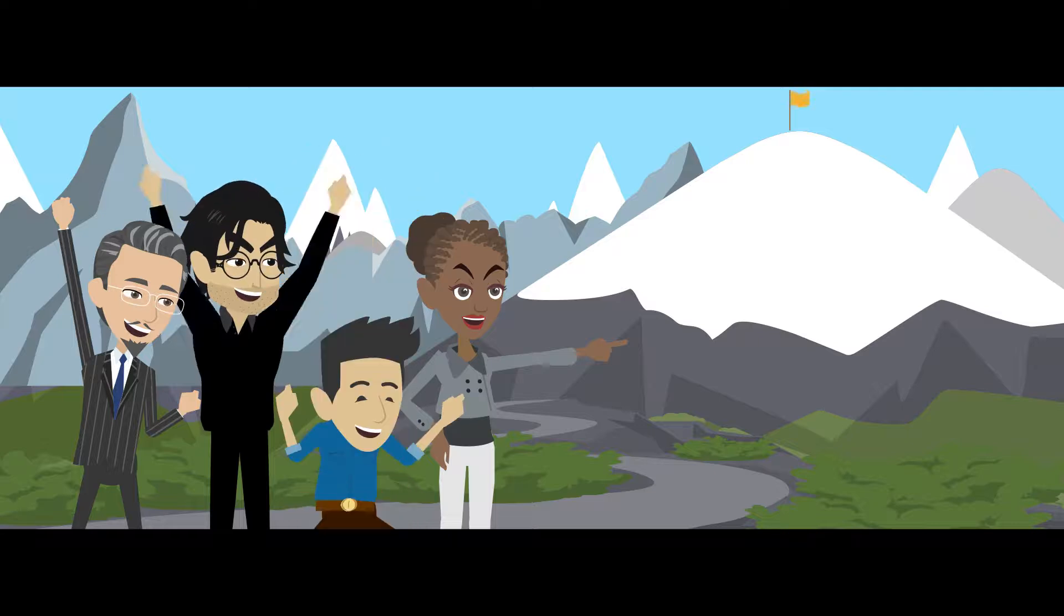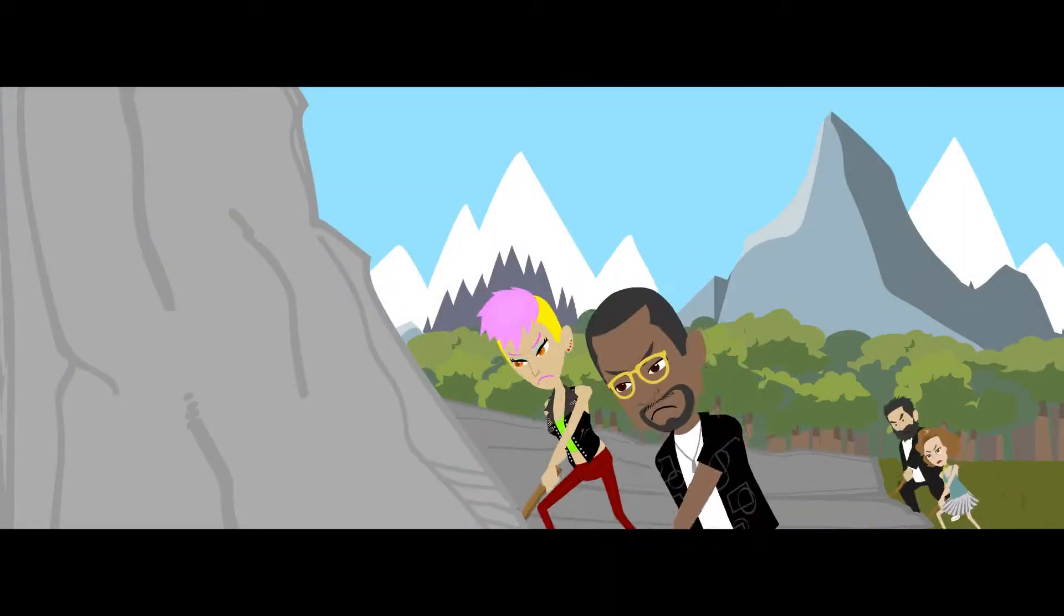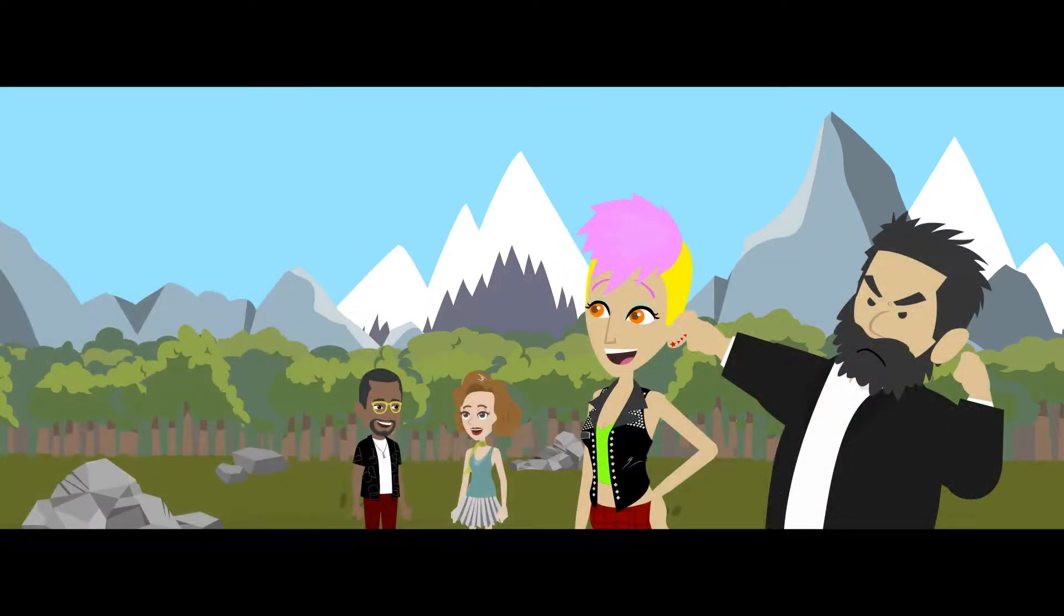The fixed signs include Leo, Aquarius, Taurus, and Scorpio. They are strong-willed, consistent, and are known for their perseverance. They are great at taking ideas and bringing them to fruition.